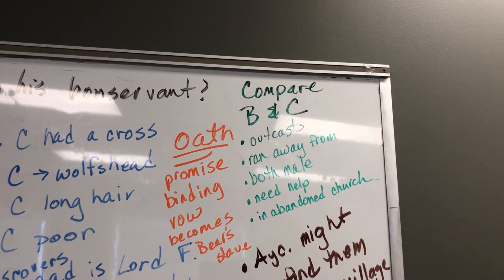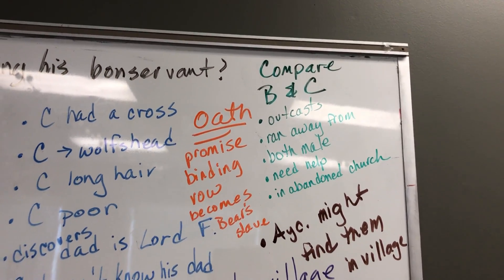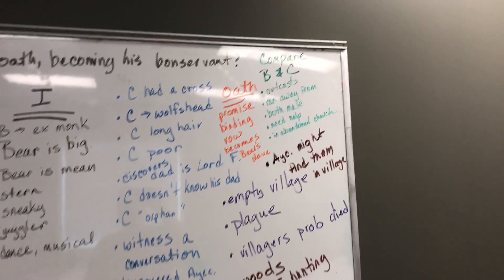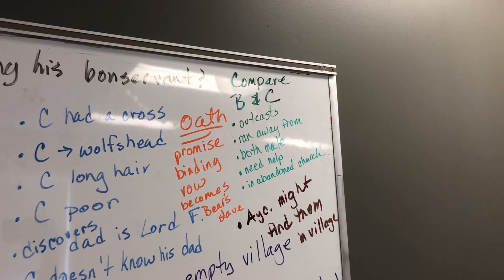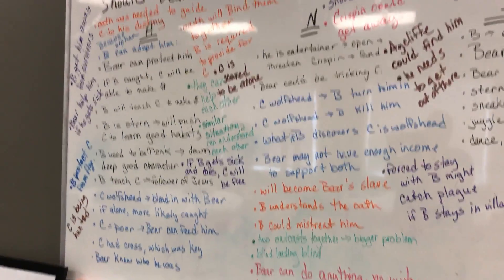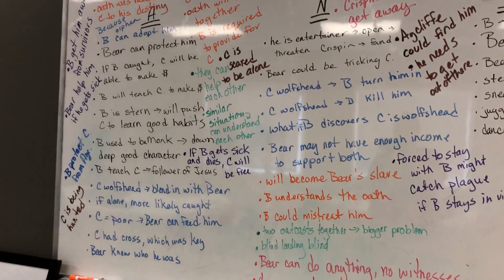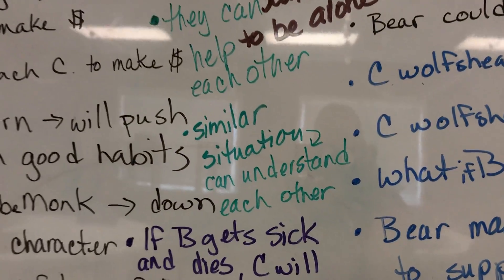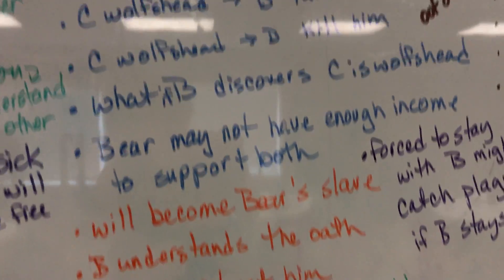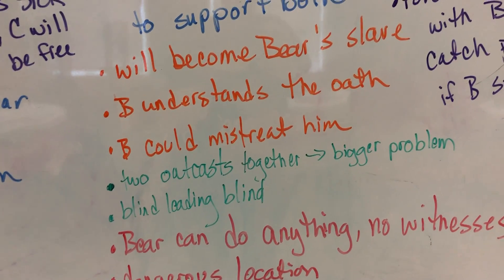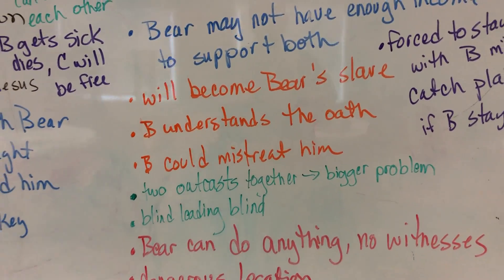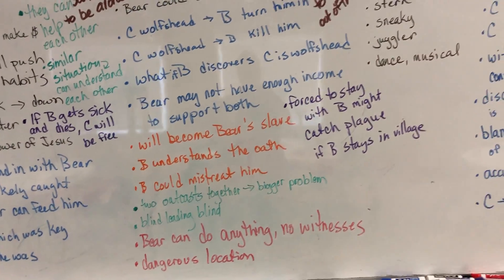Notice the initial brainstorm — that information goes into my interesting. This whole side of the board is my interesting. I took the comparison of Bear and Crispin and how they were the same, and we came up with a couple of reasons for affirmative and negative — how they're in similar situations, they can understand each other, they could help each other. Or somebody came up with the idea that they're both outcasts, which could create a bigger problem — it's like the blind leading the blind. You can take those and make them go both directions.